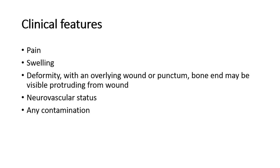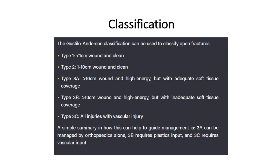The Gustilo-Anderson classification can be used to classify open fractures. Type 1: less than 1 cm wound and clean. Type 2: 1 to 10 cm wound and clean. Type 3 can be divided into A, B, and C. Type 3A: more than 10 cm wound and high-energy, but with adequate soft tissue coverage.